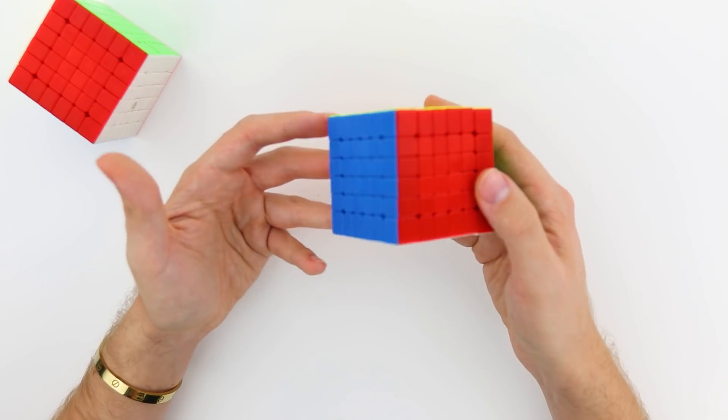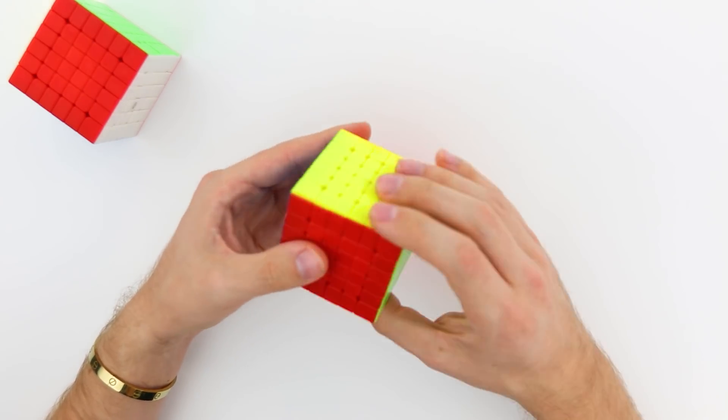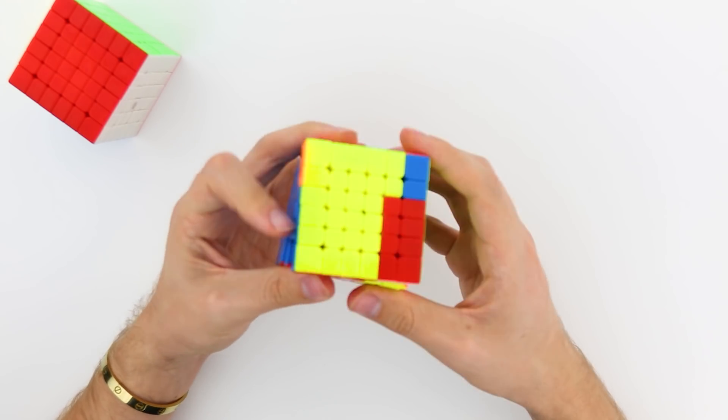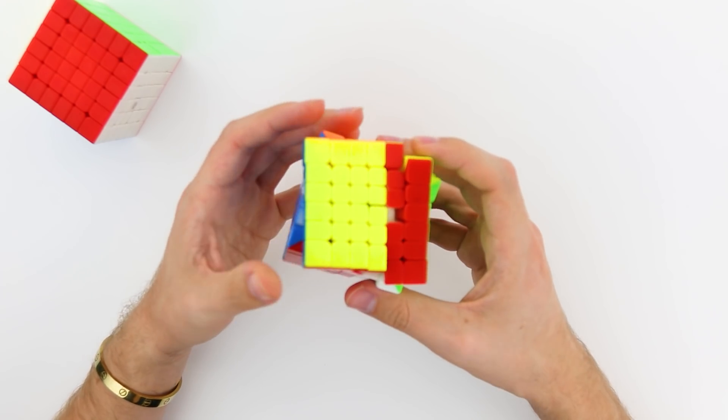Typically, I do like when the magnet strength is more uniform throughout all the layers, but this really doesn't bother me too much, and it's not really something that I have found I noticed too much while solving.